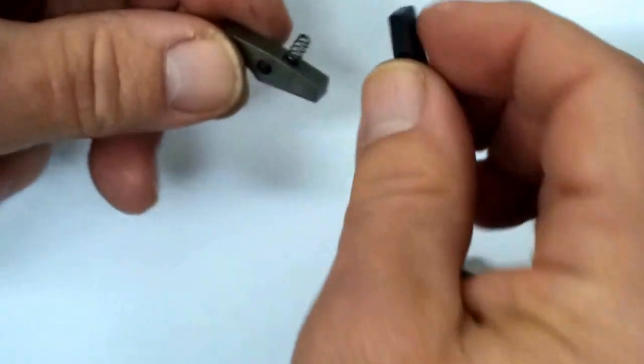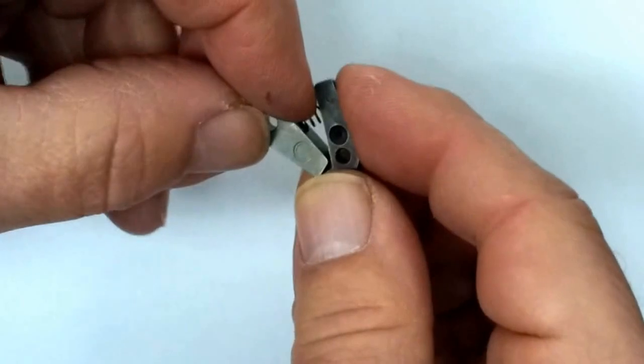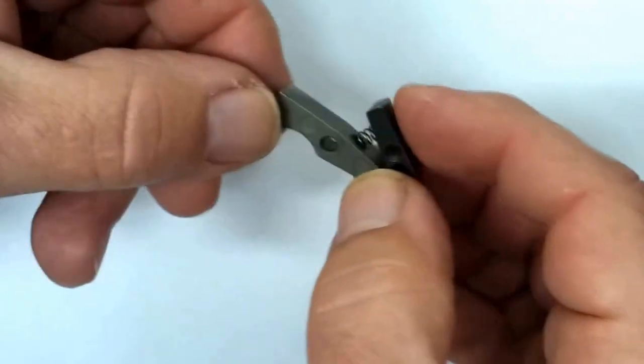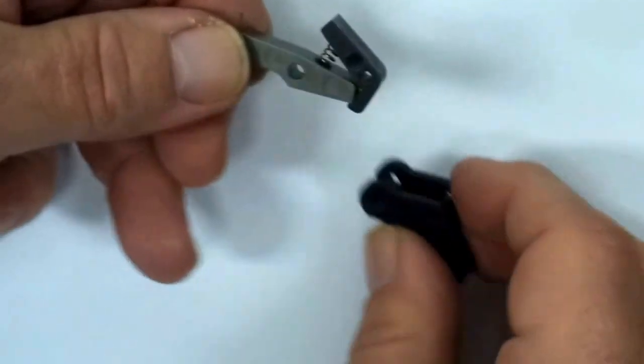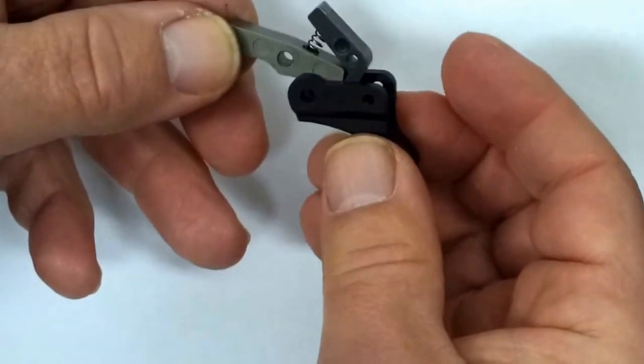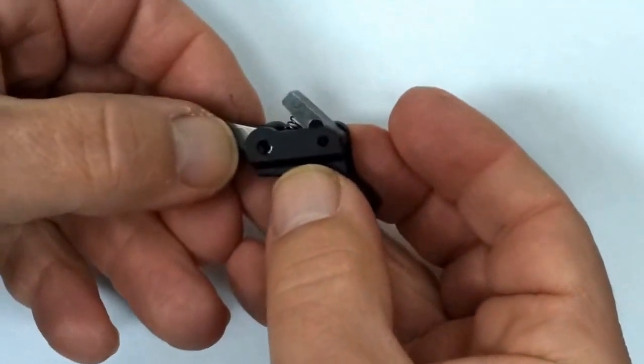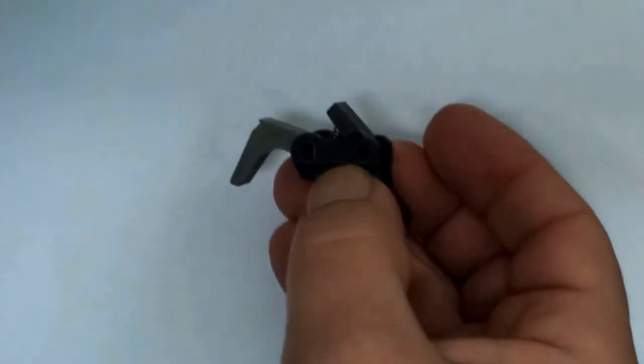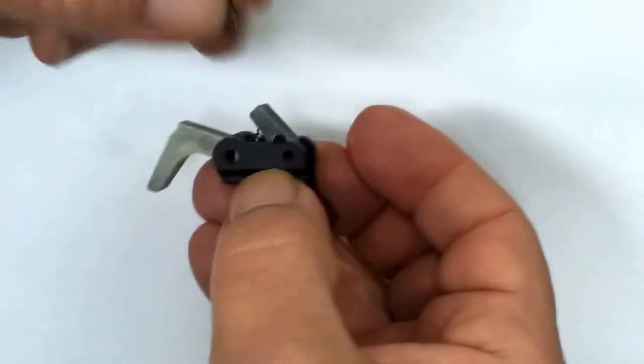Here, I'm inserting the sear and the disconnector together. I'm going to hold them in place just like that while I put them into the trigger, line up the hole, and insert my disconnector pin.